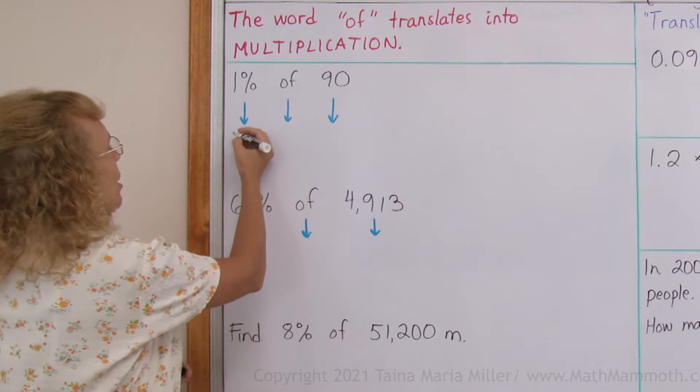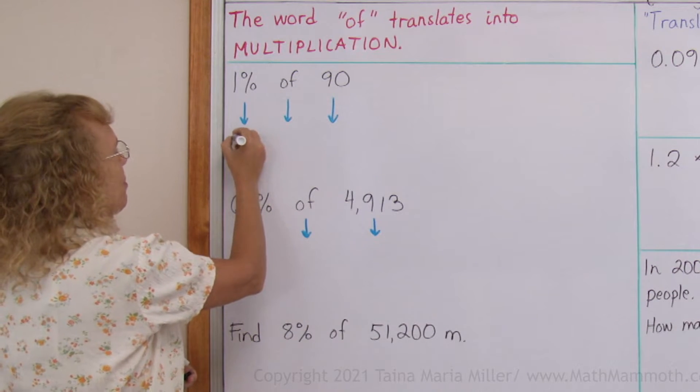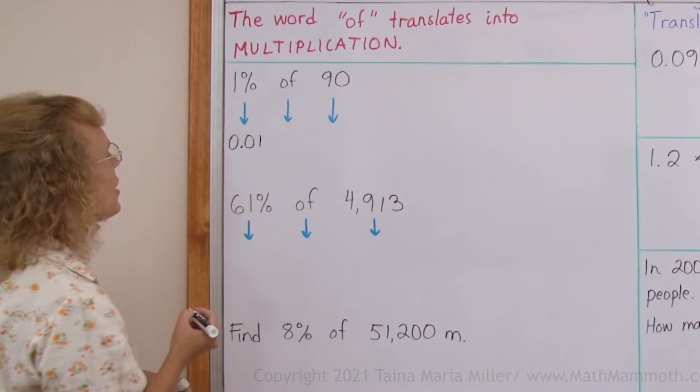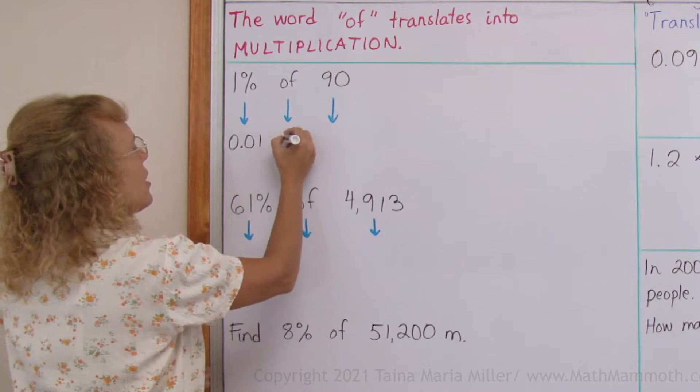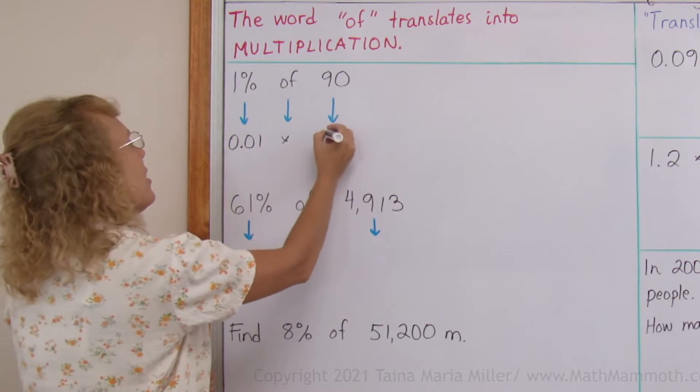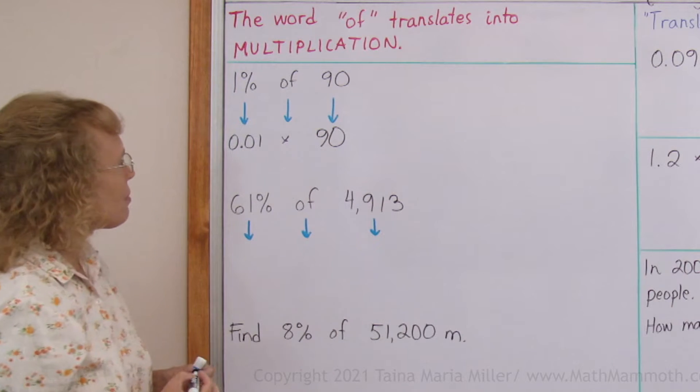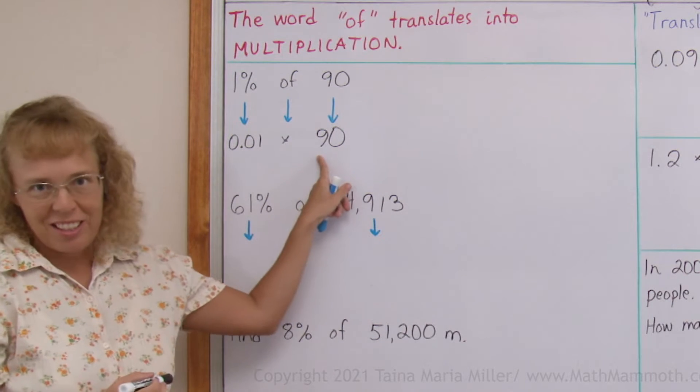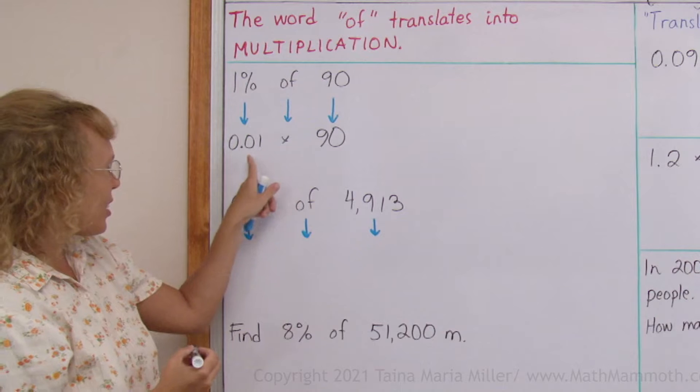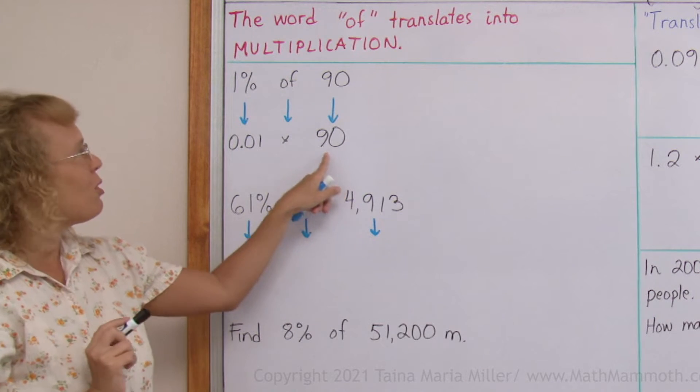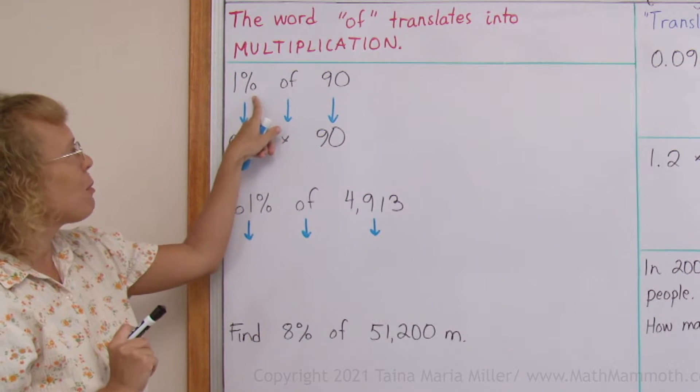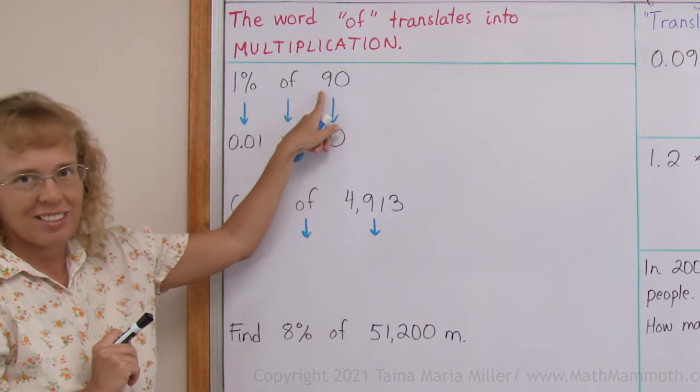So 1% as a decimal is one hundredth, 0.01. This 'of' is the multiplication. 90 does not change. Now if I want to calculate this I can use decimal multiplication or I could use mental math thinking of one hundredth part of 90.